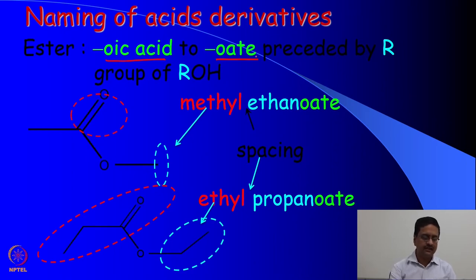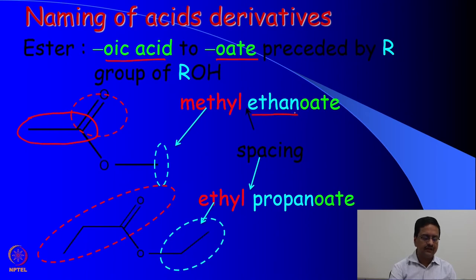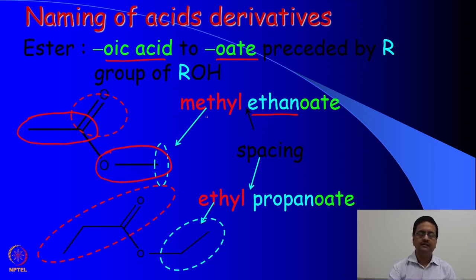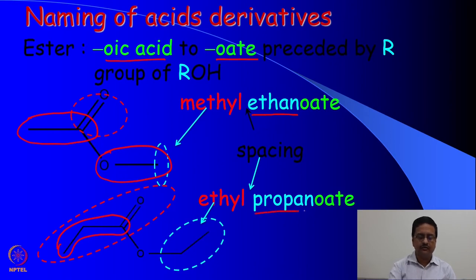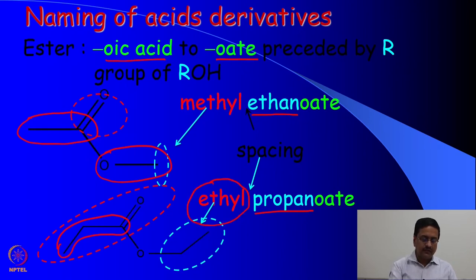In the example, you have one carboxylic acid originating from an acid containing two carbons. It was ethanoic acid, and I have a methyl group connected to the oxygen. So it is the methyl ester of ethanoic acid — the name should be methyl ethanoate. Similarly, the next acid shown has three carbon atoms, so it originates from propanoic acid. When it is an ester, the name becomes ethyl propanoate.